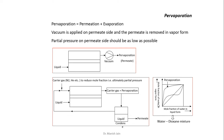This is the mole fraction of water in the vapor and this is the mole fraction of water in the liquid in the vapor-liquid equilibrium. At a lower concentration of water in the liquid, you have a higher concentration of water in the vapor phase. But when you increase the concentration of water in the liquid, the dioxane concentration will increase in the vapor phase compared to the liquid phase — this is the type of azeotropic mixture.